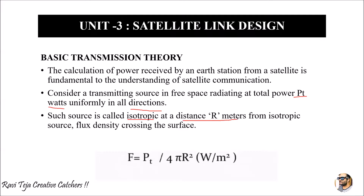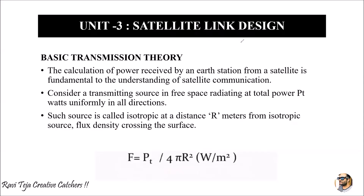At a distance r meters from the isotropic source, the flux density crossing the surface is given by: F = Pt / (4πr²) watts per meter square, where Pt is the total transmitted power in watts and r is the distance in meters.